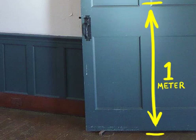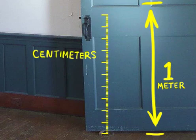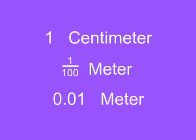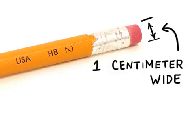If we divide a meter into 100 equal parts, we now have centimeters. So 1 centimeter is equal to 1 one-hundredth of a meter, which is written as 0.01 meter. For reference, most pencils are about 1 centimeter wide.